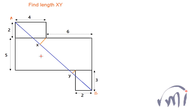Since all of them are rectangles, all these angles are 90 degrees. The perpendiculars also make 90 degree angles at these points. We have to find the length of XY, so first we will find the length of AB.